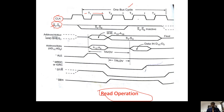The multiplexed address and status lines, and BHE bar/S7, are transmitted during T1 time. After T1, they act as pure status lines, pure address lines, and BHE bar — they are separated after T1. Similarly, the address and data lines AD0 to AD15 act like address lines during T1 time. For the remaining time T2 to T4, they act like data lines.